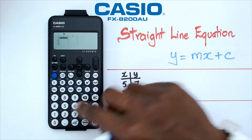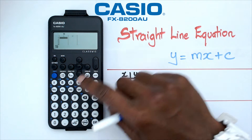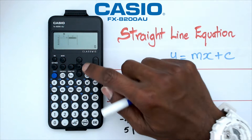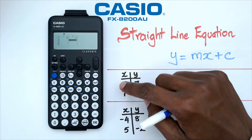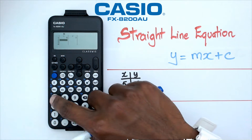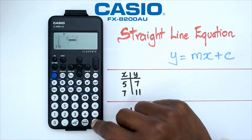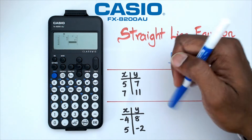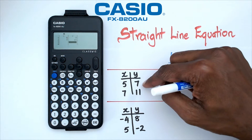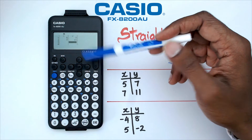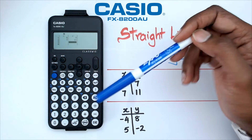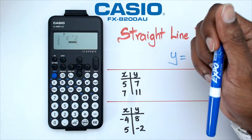So for the first question, I'm going to put in five and seven as my first coordinate, then I'm going to do seven and eleven. It doesn't matter in which order you put the points in the calculator — you could have put seven, eleven first or five, seven first, it doesn't matter. The most important thing is making sure that you put the right y values for the right x values, otherwise you're going to end up with a completely different equation.